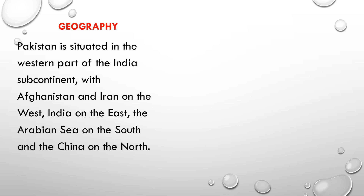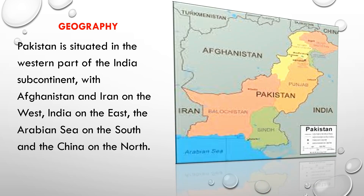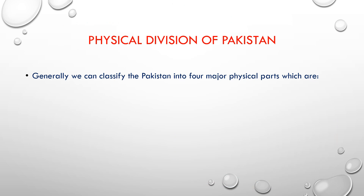Pakistan got the western part of the Indian subcontinent. Look at the image — you can see the neighboring countries of Pakistan. On the west side: Afghanistan and Iran. On the east side: India. On the north side: China. On the south side, the blue patch shows the Arabian Sea, meaning in the south we share a border with the Arabian Sea.